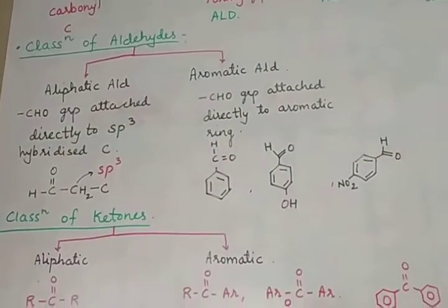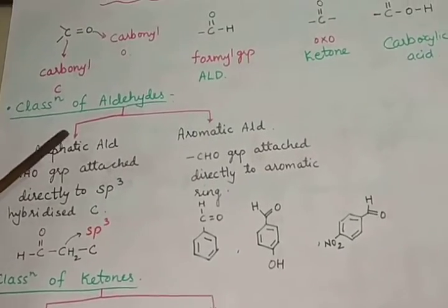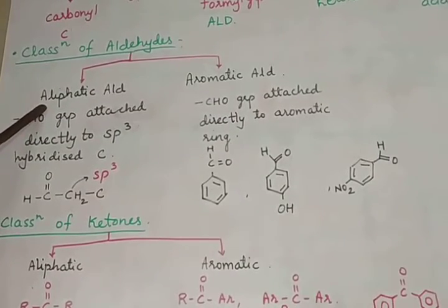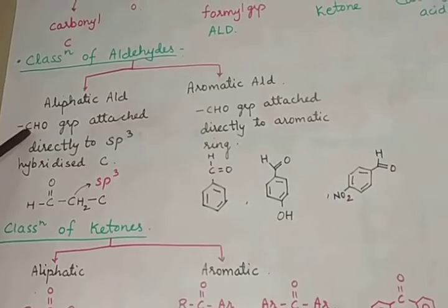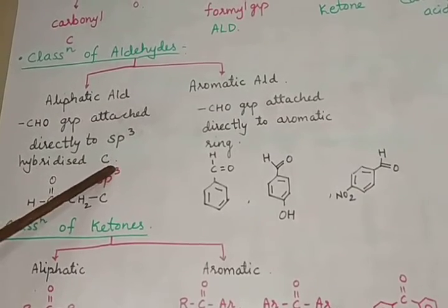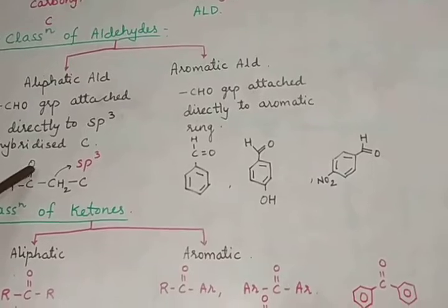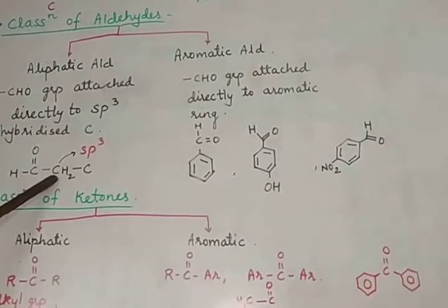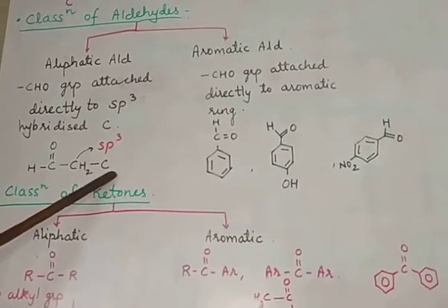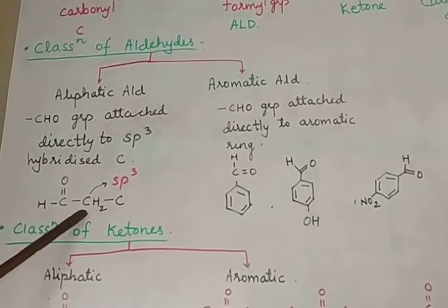Aldehydes are classified into two types: aliphatic aldehydes and aromatic aldehydes. In aliphatic aldehydes, the CHO group is directly attached to an sp³ hybridized carbon. So here the aldehyde group is attached to an sp³ hybridized carbon, with the remaining chain being alkyl, such as CH₃.